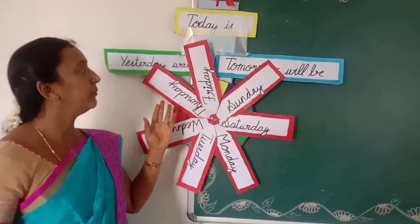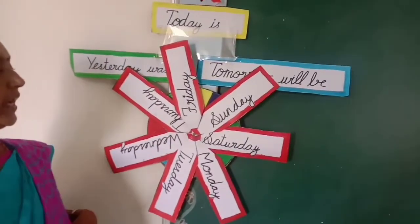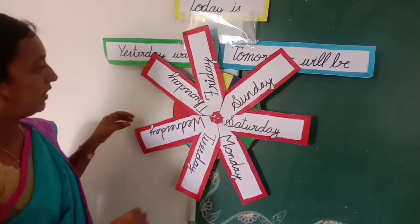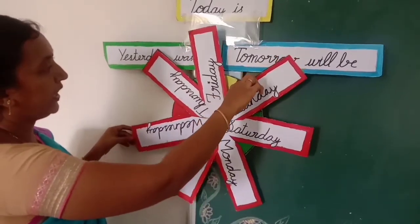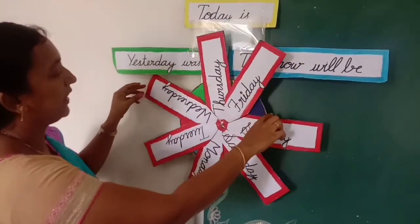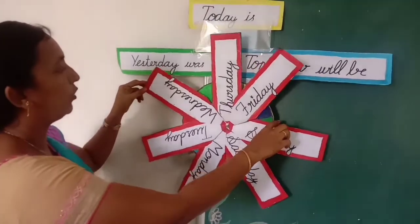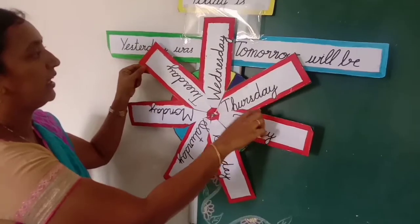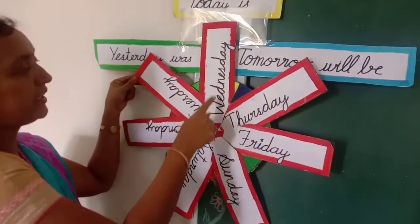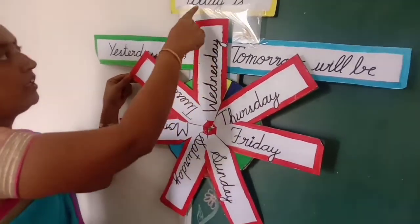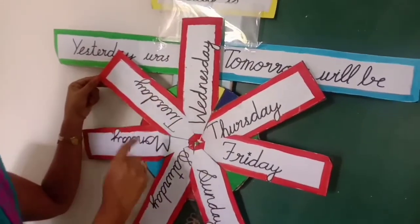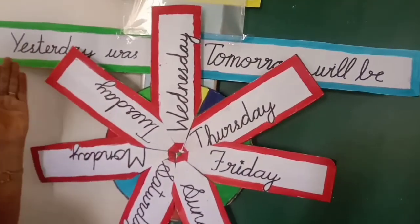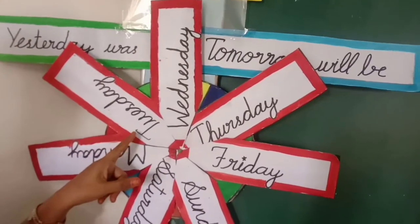Okay kids, let's start with the circle time. Come. What is the day today? Do you know what is the day? Yes. Today is Wednesday. Rotate it slowly. Where is Wednesday? Today is Wednesday. Say louder. Today is Wednesday. So, yesterday was Tuesday. Yesterday was Tuesday.